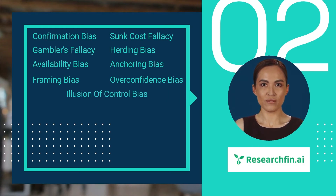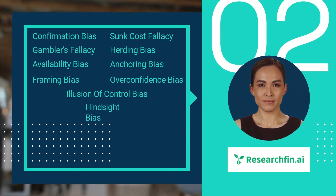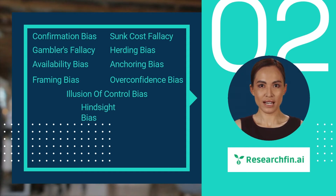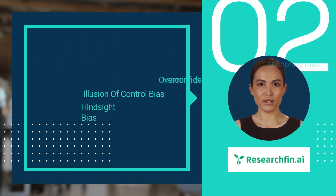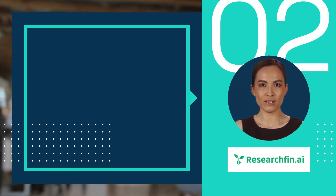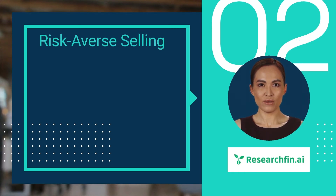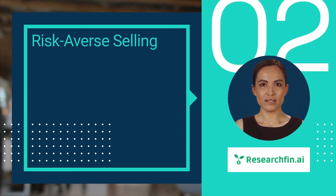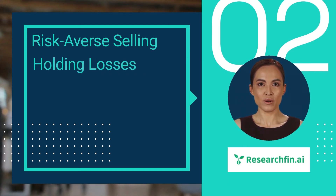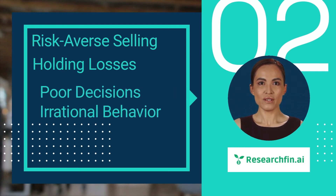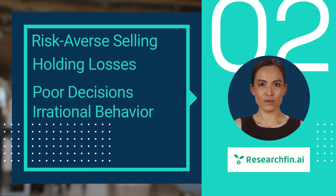Illusion of control bias is the belief that we can control events that are outside of our control. Hindsight bias is the tendency to believe that we could have predicted the outcome of a situation after it has already happened. Fear and greed can both impact trading in a number of ways — fear can lead to traders becoming risk-averse and selling winning positions too early, while greed can lead to traders holding losing positions too long and taking on too much risk, causing poor decision-making and irrational behavior.